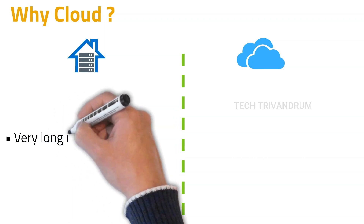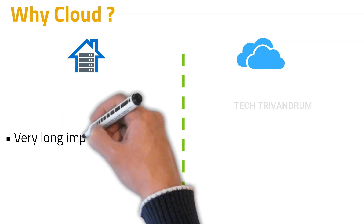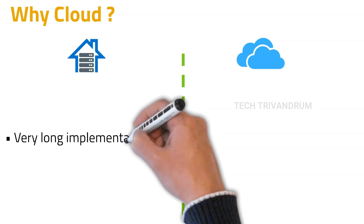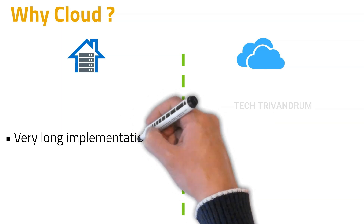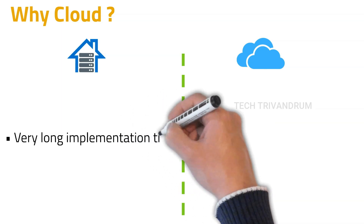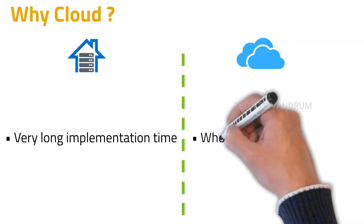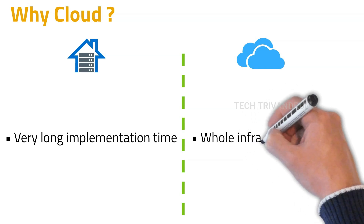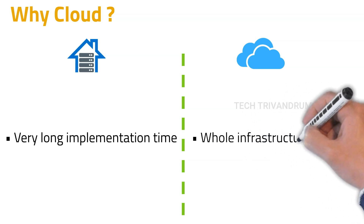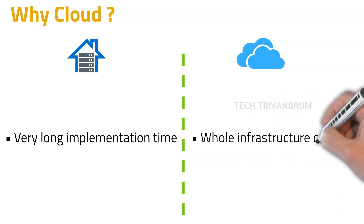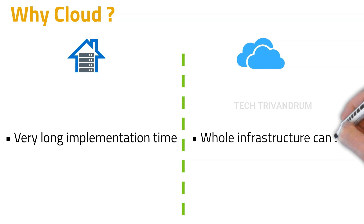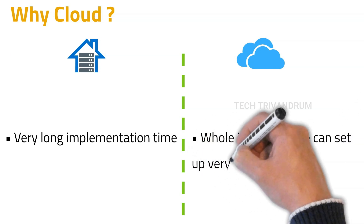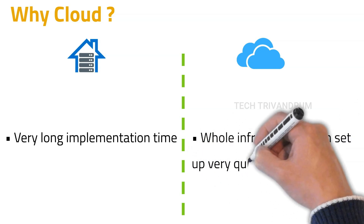Moreover, the implementation time required in on-premises is very high. For example, setting up the server and initially installing software may take days or even weeks. But in the cloud environment, all these can be done in a few hours, and we can also experiment with different setups before finalizing the best one without wasting much time.